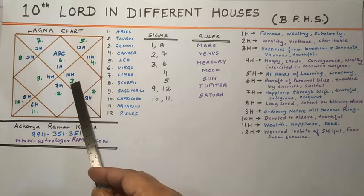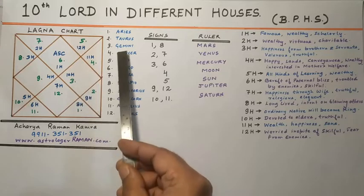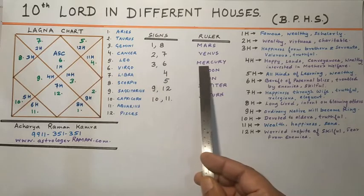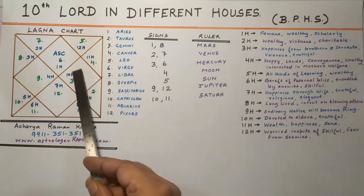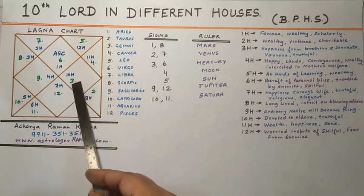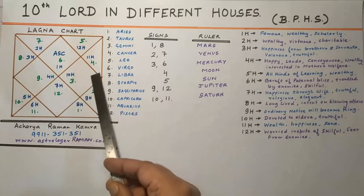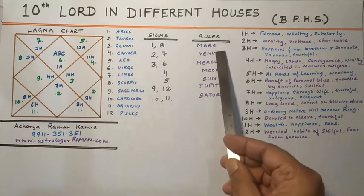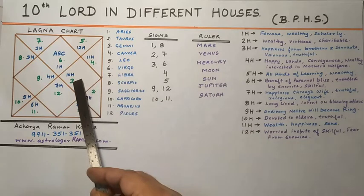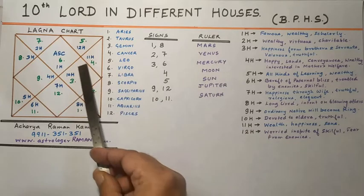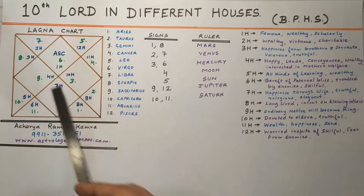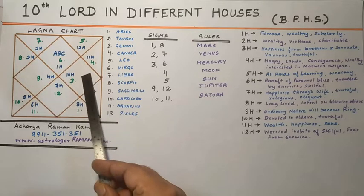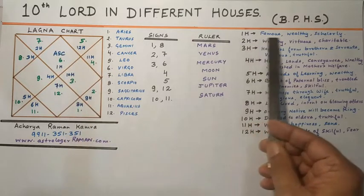Here in this case, the 3rd number sign — Gemini — is in the 10th house, whose ruler is Mercury. But we are not doing the results of Mercury in different houses specifically, because the sign in the 10th house could be any one of the 12, and the Lord could be any one of the 9 planets. We are doing the results of the 10th Lord in different houses. Now starting with the results.